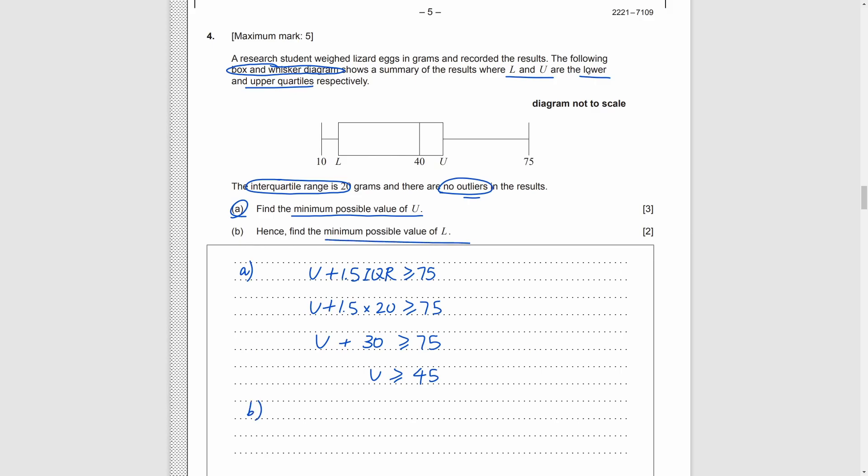Part B. We need to find the possible value of the lower quartile. As the interquartile range is 20, the lower quartile is just the upper quartile minus that, which is 25.